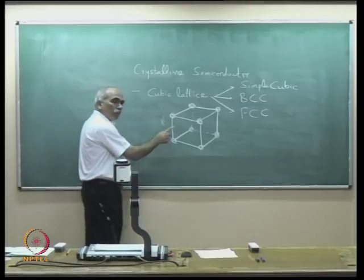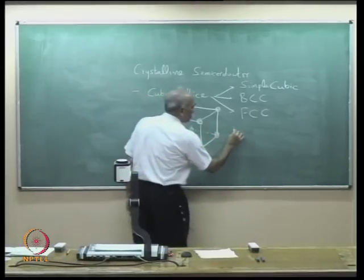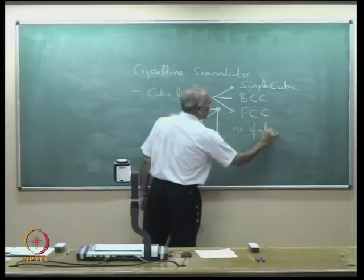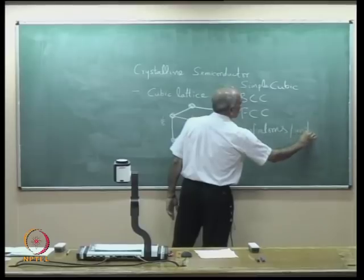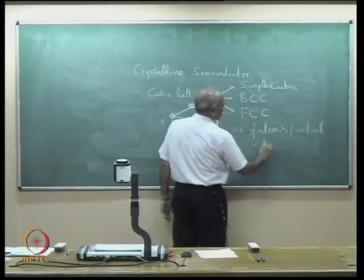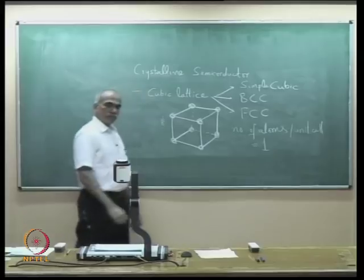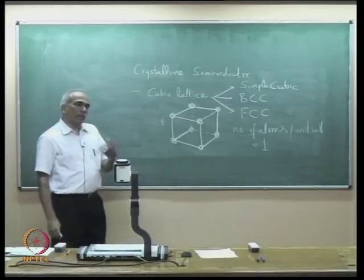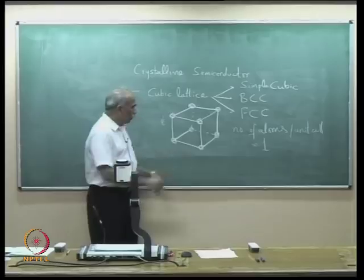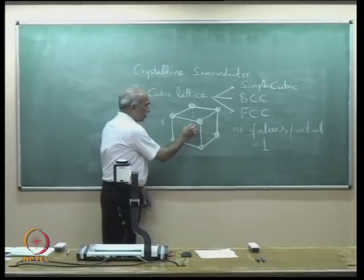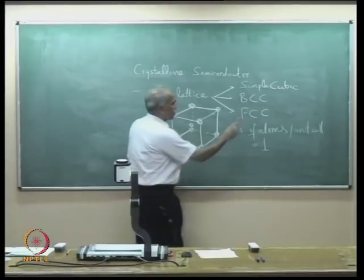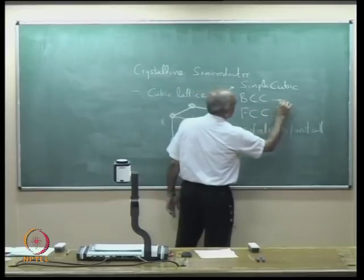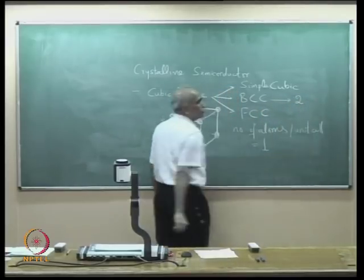With 8 atoms each contributing 1/8, the number of atoms per unit cell for simple cubic is 1. If you take body-centered cubic, there is one more atom at the center, and therefore the number of atoms per unit cell for BCC is 2.